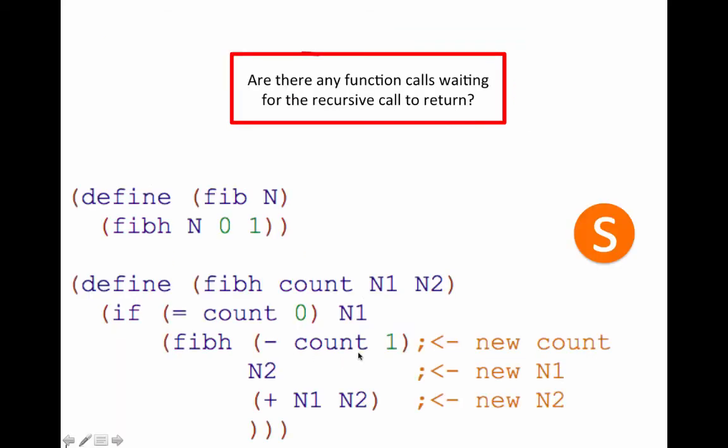Let's look at that in code. So the new count or that new first input is just going to be subtracting one, the new second input or that new n1 value will just be the old n2 value. And then I'll add together the second and third inputs or n1 and n2 to get the new n2 value or that new third input. And again, my base case is when count is equal to zero, I just return that second argument or that n1.